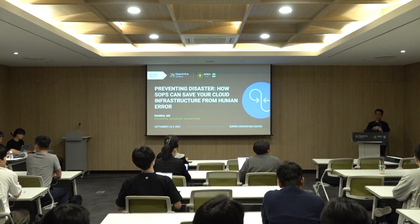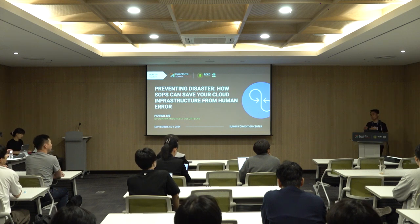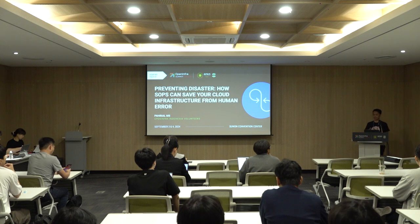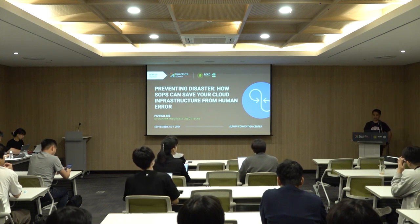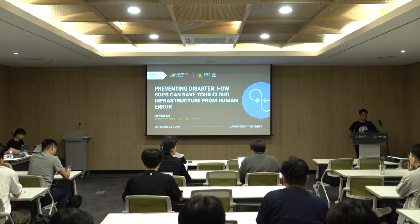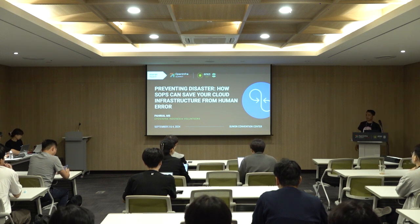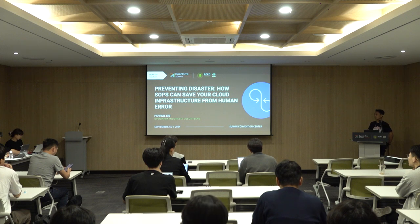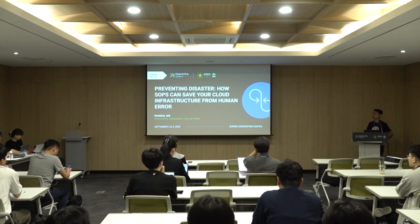We saw a lot of topics, very interesting, about new technology, about new open source software. But my topic is not about technical — my topic is back to basics. As you can see in the front slide, today we talk about preventing disaster: how SOP can save our cloud infrastructure from human error. Our focus today is on how standard operating procedure — SOP — can act as a crucial safety net, preventing potential disaster and ensuring the resilience of our cloud infrastructure.